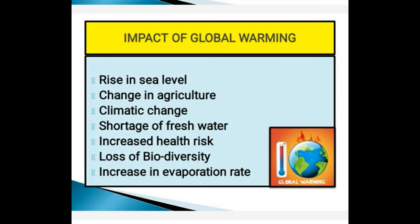Sixth, loss of biodiversity — most plant and animal species grow in a specific temperature range, and global warming may force many of them to shift towards higher altitudes or latitudes. Many species may even become extinct. The last impact is an increase in the evaporation rate — water in lakes, rivers, and other water bodies would evaporate faster due to increased air temperature, and it can cause changes in ocean current characteristics.